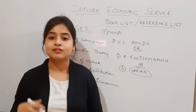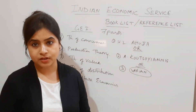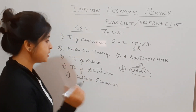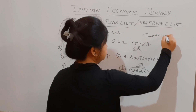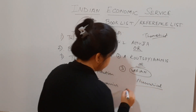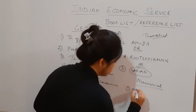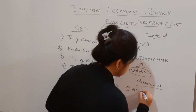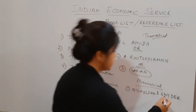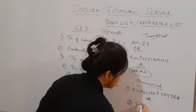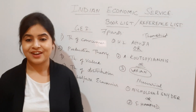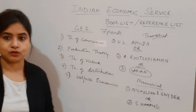For the theoretical portion those are the recommendations. For the numerical portion you can refer to either Nicholson & Snyder or Sissel & Hammond — any of these two books will give you the assistance needed for the numerical portion. This completes the book list for General Economics One microeconomics.